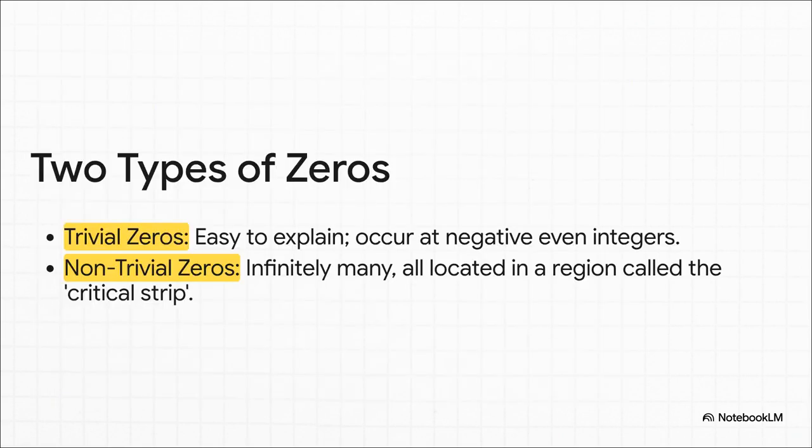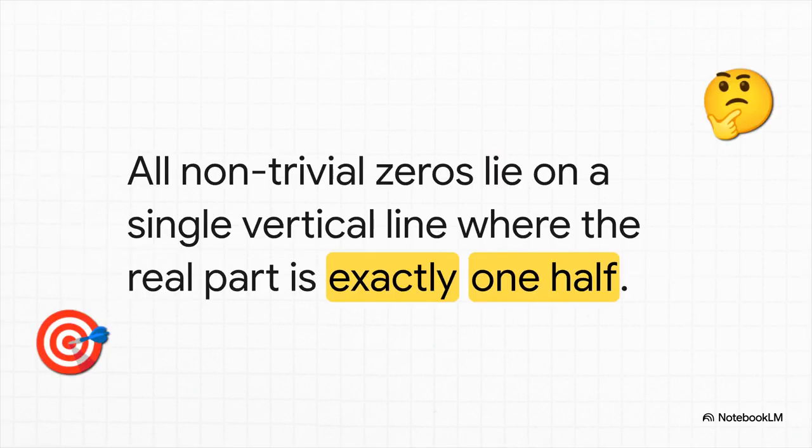Now, some of these zeros were easy to find. They were predictable. We call them the trivial zeros. And honestly, they're not that interesting. But the others, the non-trivial zeros, they were way more mysterious. Riemann found that they all seem to be huddled together in this one narrow, vertical slice of the complex plane that we now call the critical strip. And here it is.